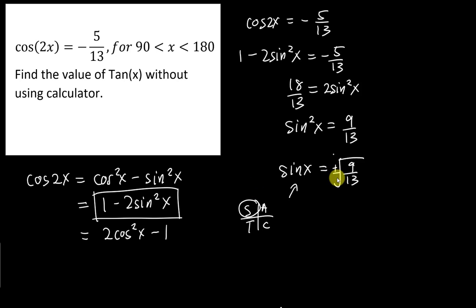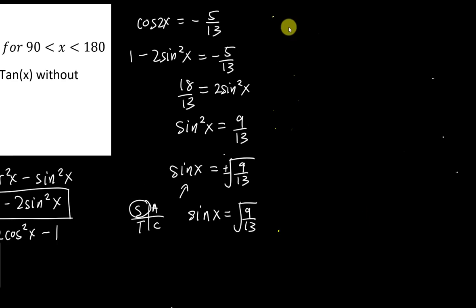So therefore, here you have plus minus, but over here, I will only take the plus version. So therefore, I will say sin x equals to square root 9 over 13. Alright, then I will draw the triangle over here in the second quadrant.